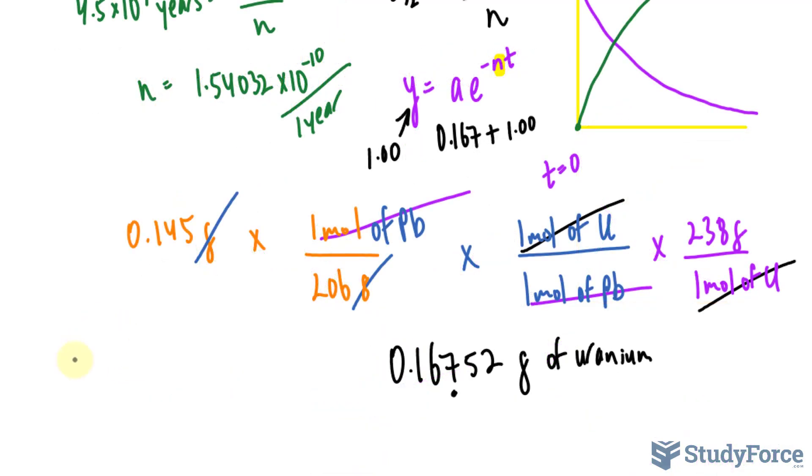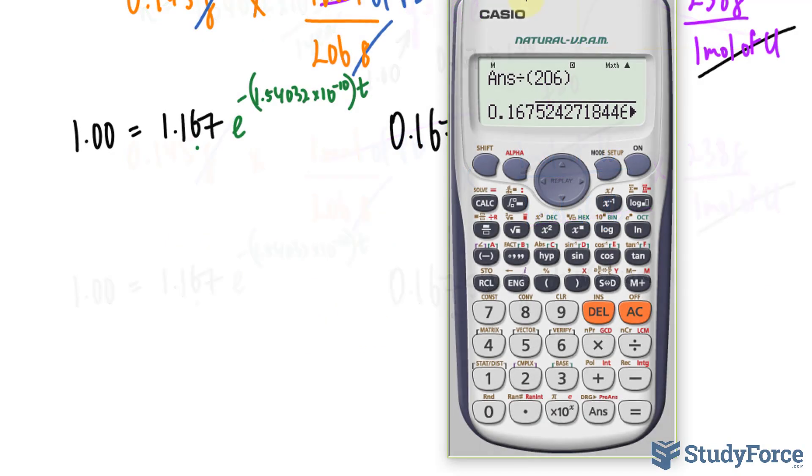1.00. Let me substitute all the information here. 1.00 is equal to the sum of these two numbers. So 1.167, and remember this is two significant figures after the decimal place, times e raised to the power of negative this number, 1.54032 times 10 to the power of negative 10, multiplied to what we're looking for, t. We can now solve for t. I'll divide both sides by 1.167. That will get rid of that number on the right side. And we get this now on the left side. So imagine this number being on the left side of this equation is equal to e to the power of this expression. So let me write this down for clarity.